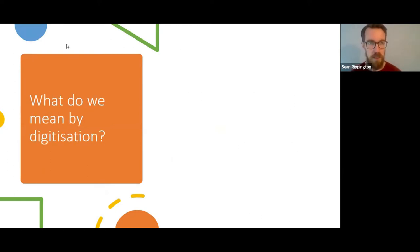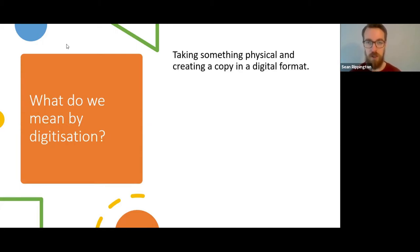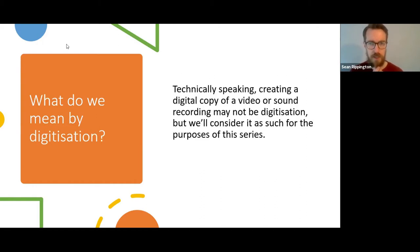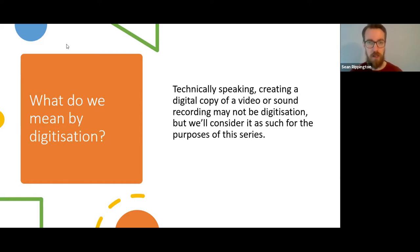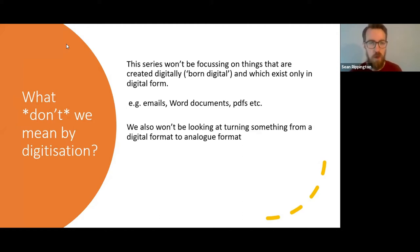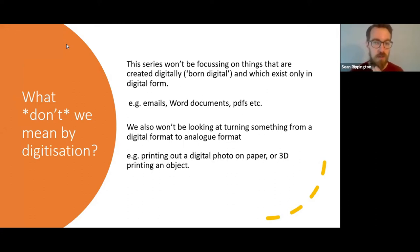So firstly, definitions — what do we mean by digitisation? Essentially, we're talking about taking something physical and creating a copy in a digital format. The most obvious example might be taking a digital photo of a paper manuscript, digitally scanning a book, or creating a 3D scan of an object. Technically, creating a digital copy of a video or sound recording might not be digitalisation, but for this series we are going to include it. We aren't covering things created digitally — born digitally — like emails, Word documents, or PDFs. We also won't cover taking something digital and turning it analogue, such as printing out a digital photo.